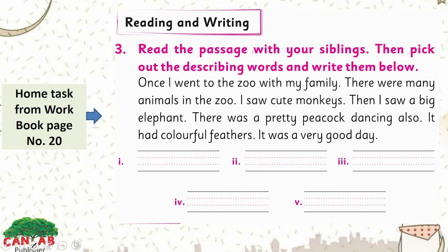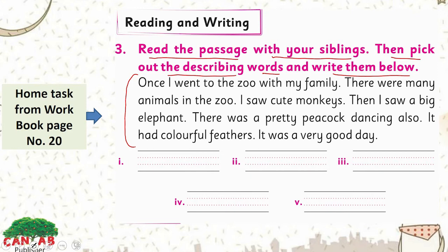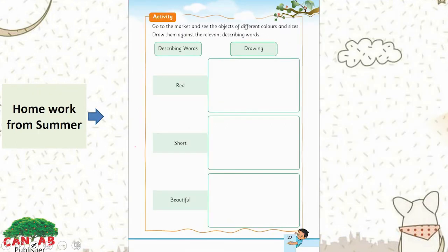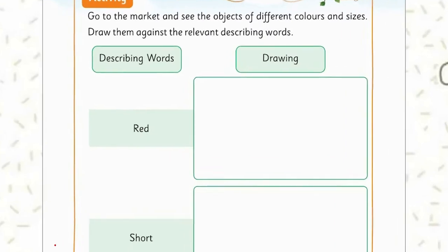This is a reading and writing exercise. Read the passage with your siblings, then pick out the describing words and write them below. We have discussed the describing words — you have to read this paragraph with your siblings and choose the describing words that are describing any noun. There are five describing words in this paragraph; you have to write all of them.